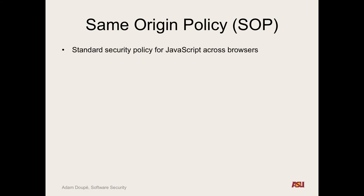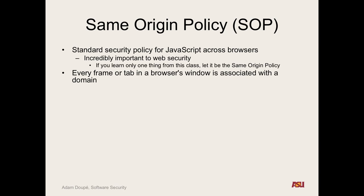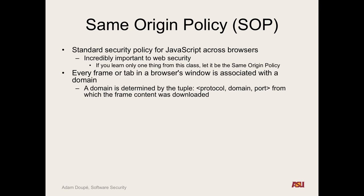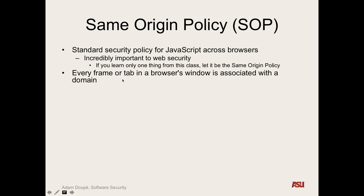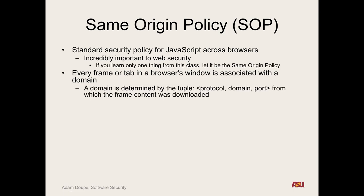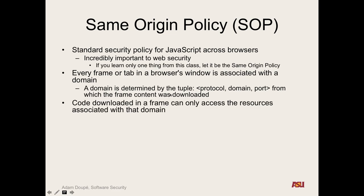The same origin policy is a standard security policy for JavaScript across all browsers. Every frame or tab is associated with a domain — the content came from some URI. The 'domain' in same origin policy terms is a tuple: protocol, domain, port. The tuple from where the frame or page was downloaded defines the origin of that code, and code downloaded in a frame can only access resources associated with that same origin. This is specifically why when I go to `badguy.com`, I can't access `google.com`'s cookies — they have a different tuple.